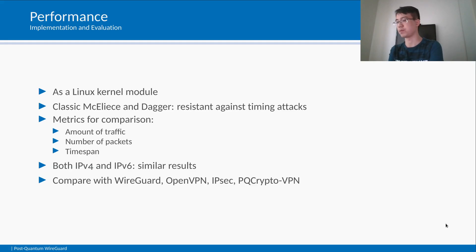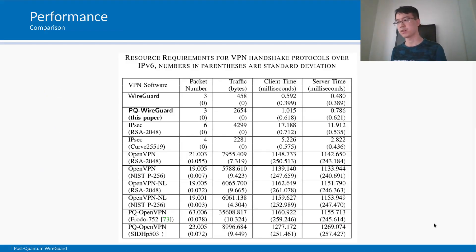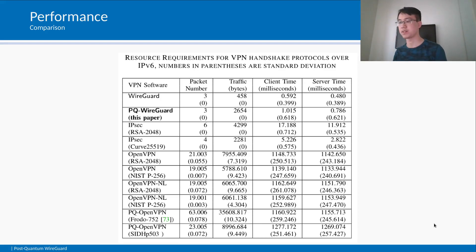PQCryptoVPN is a variant of OpenVPN from Microsoft Research that provides confidentiality and, optionally, authenticity against quantum attacks. For WireGuard, the metrics include the first application data packet, which serves implicitly as key confirmation; we use zero-length application data here. Our experiments show that PQ WireGuard increases client time and server time by 70% and 50% respectively, and that the computation of both WireGuard and PQ WireGuard are dominated by public key cryptography. Therefore, the longer elapsed time on both sides is a direct result of migrating from X25519 to Classic McEliece and Dagger.